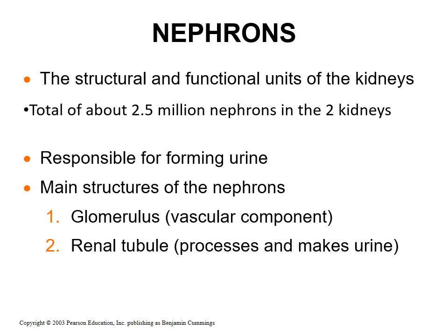Nephrons are the structural and functional units of the kidney. We have about 25 million nephrons in two kidneys, and they are responsible for urine formation. The main structures include the glomerulus, which is the vascular component, and the renal tubule, which processes and makes the urine.